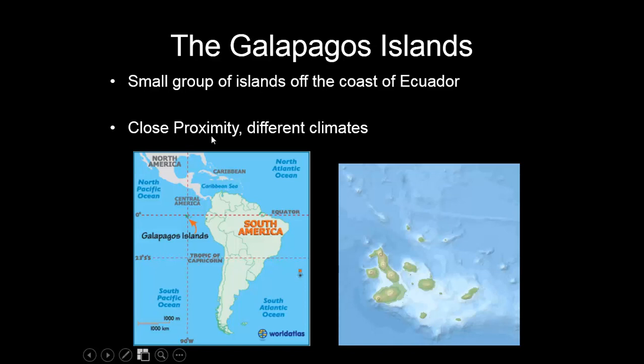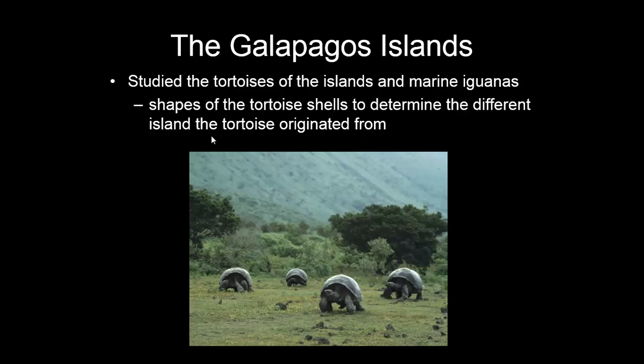Here's what the islands kind of look like — it's a small group, in close proximity, but each island has a slightly different climate. Locals can actually recognize animals from each island based on their adaptations or what they look like. In the Galapagos Islands he studied the tortoises and marine iguanas. The shapes of the tortoise shells determine which island the tortoise is from — each tortoise is different but they look very much alike; it all just depends on which island they're on.